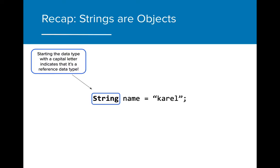Now that we've learned a bit more about methods and objects, we are going to revisit the first objects that we learned to use, strings. When the data type starts with a capital letter, this indicates that it is a reference data type.